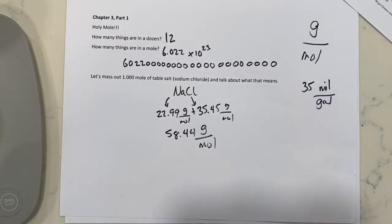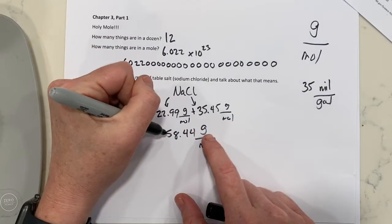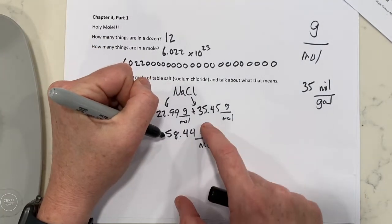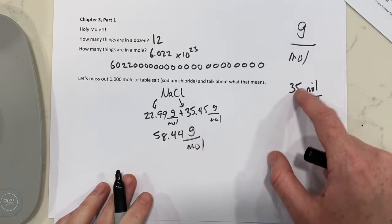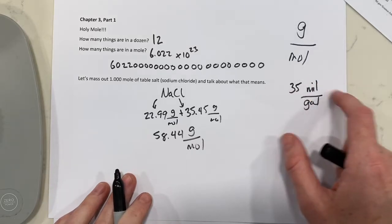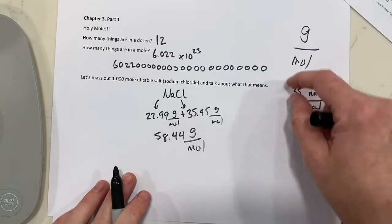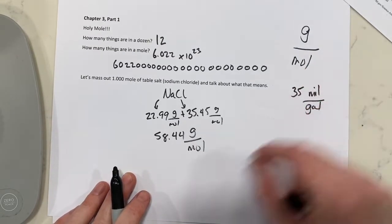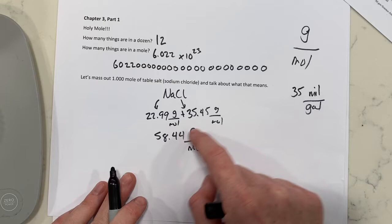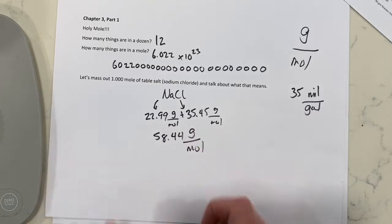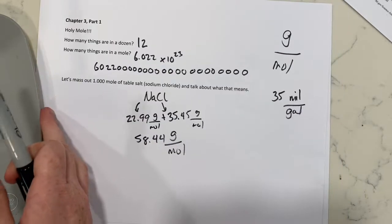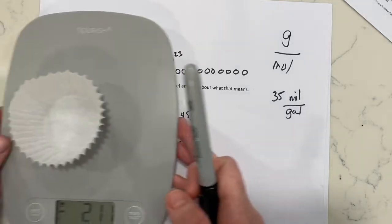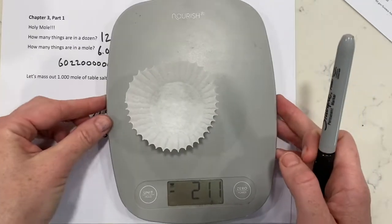So when I say how many grams are in a mole of sodium chloride, there are 58.44 grams in a mole — for the exact same reason we use these units. It's the amount of something per something: 58.44 grams in a mole. So if I say how much is a mole of table salt, it's 58.44 grams.